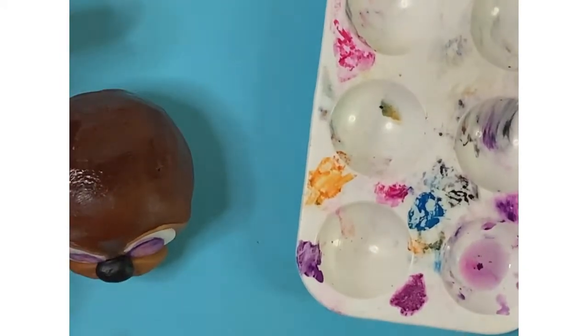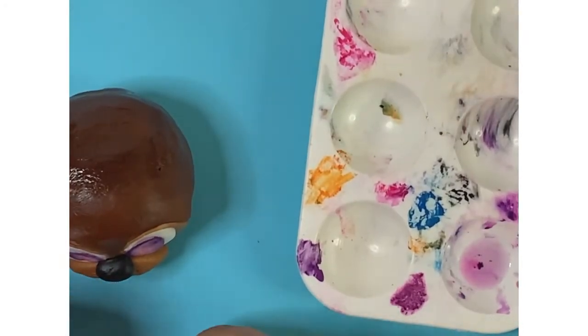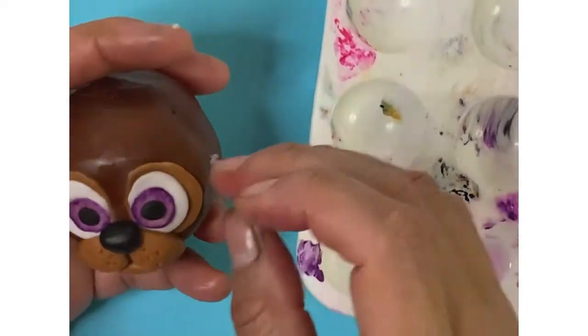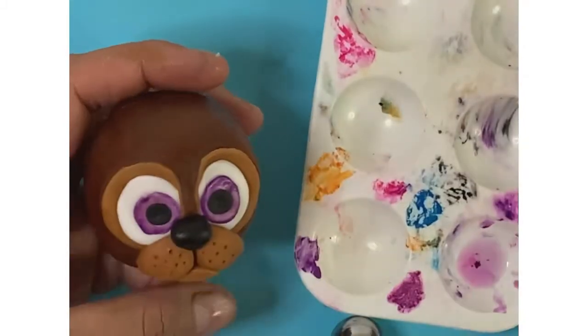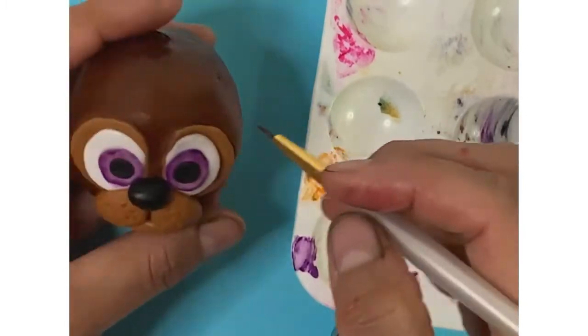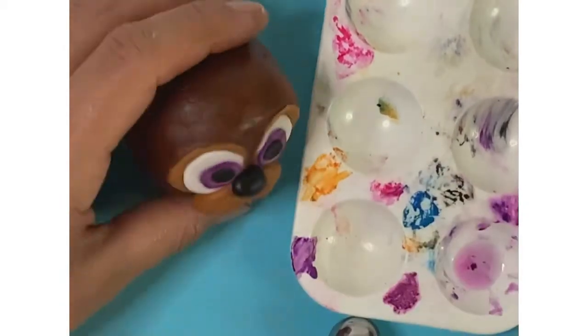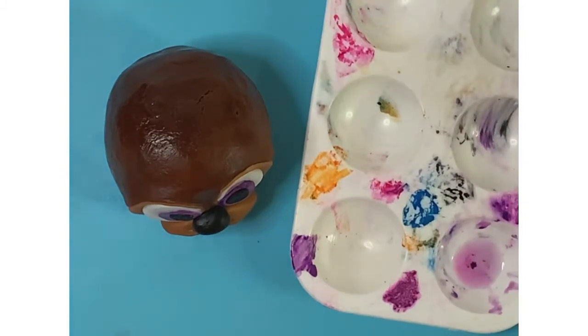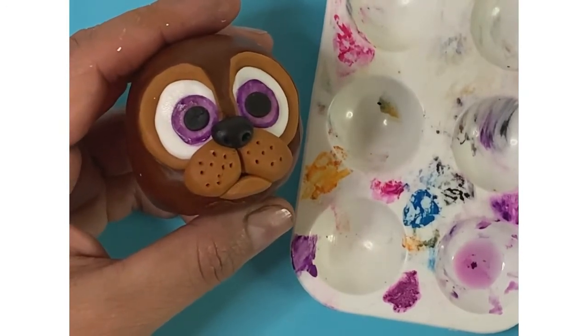And now I'm gonna mark where my pupil is, and I'm using a tiny bit of black fondant, but you can paint with black color as well. Try to make it like flat. Yep, just fixing, fixing, fixing the color. And then I'm just gonna add a white light dot, like the bright or the light. So this gives like life to the eyes.